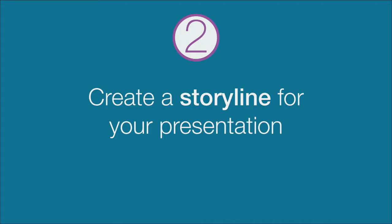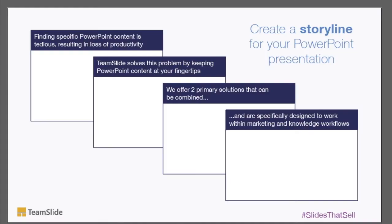Tip number two: create a storyline for your presentation. Before you begin using PowerPoint to create your slides, write out an outline for the story that you're telling. Sounds simple, but most people don't think of doing this. Setting up a story framework prior to creating slides will give your presentation more organization. One way to check if your PowerPoint slides have effective action titles is to stack your slide titles and see if they make a story.